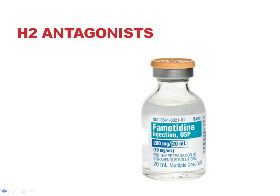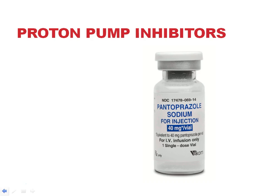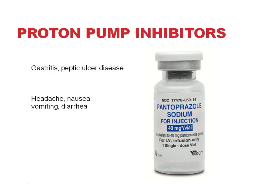Histamine-2 receptor antagonists are used when acid suppression is needed, such as in GERD and gastritis. They work relatively quickly and are very well tolerated, though they may cause some drowsiness. Proton pump inhibitors are also used for acid suppression and are considered first-line treatment in peptic ulcer disease. They don't work as fast as H2 blockers and have a slightly larger side effect profile, but are a stronger acid-reducing medication.